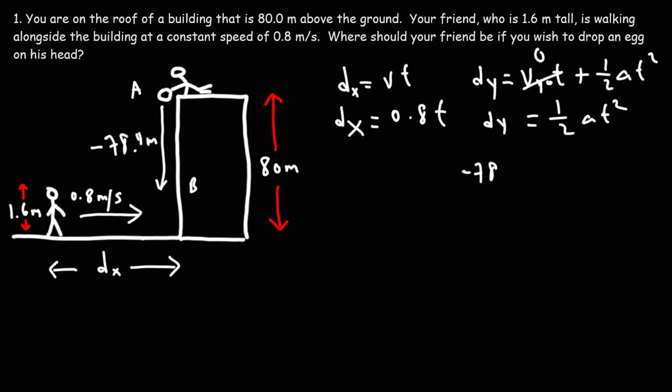So this is going to be negative 78.4, which is equal to 1 half times negative 9.8. That is the acceleration due to gravity.